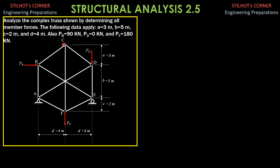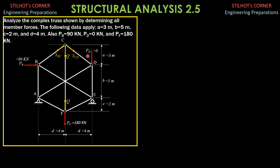We'll begin at joint C, and because of symmetry, SBC equals SCD. If you sum up forces horizontal, the angle is arctan of 3 over 4. We will denote the stress in CF as Q. Because of symmetry at C and F, we can easily express the other members in terms of Q. The angle that BC and CD make with the horizontal is arctan of 3 over 4, and that is 36.87 degrees.